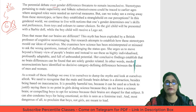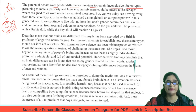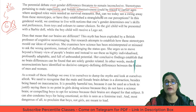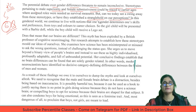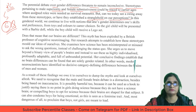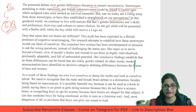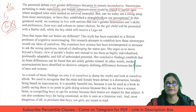The second RC reads: 'The perennial debate over gender differences threatened to remain inconclusive. Stereotypes pertaining to male superiority and female submissiveness can be traced to earlier ages, where assigned roles were needed as survival measures. But can we today swing away from these stereotypes, or have they established a stranglehold on our perceptions?' A stranglehold means a grip where one cannot get away — complete control over someone.